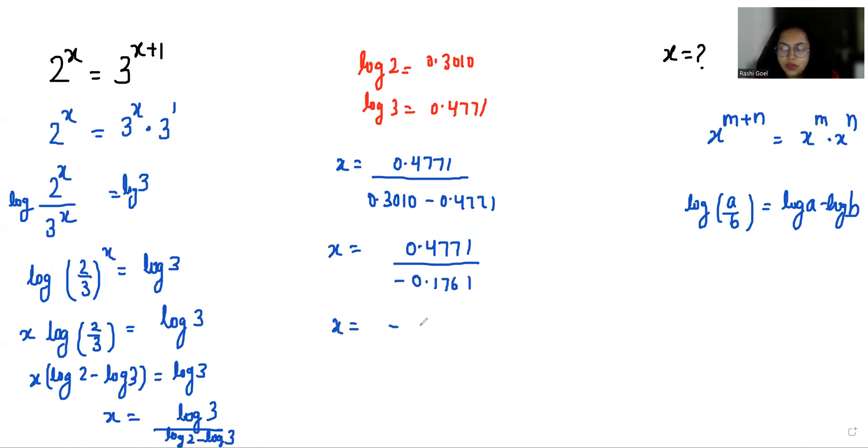So x is equals to negative 2.709. I hope it's clear and you find it useful, so please give us a thumbs up and subscribe to my channel. Stay tuned.